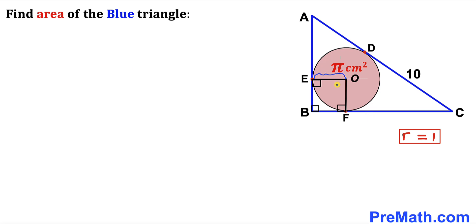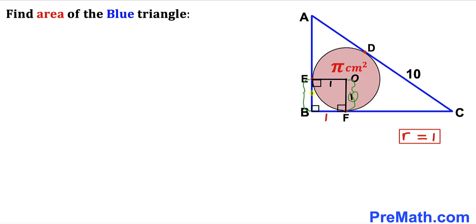Since OE is a radius, OE = 1. Likewise OF = 1. Now focusing on square EOFB: length EO equals length BF, so BF = 1 centimeter. Similarly, OF equals EB, so EB = 1 centimeter as well.